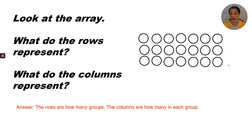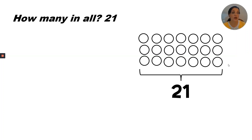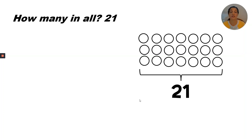The rows are how many groups, and the columns are how many in each group. How many in all? Twenty-one. We have three rows of seven, or seven times three — it's the same as three times seven. So we can count by seven three times: seven, fourteen, twenty-one. There are twenty-one in all.